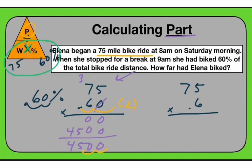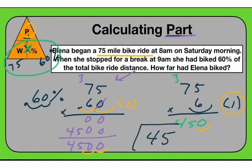On the other side, using 0.6 — six times five is 30, put a zero and carry the three, six times seven is 42, plus three is 45. That looks like 450, but I come back one decimal point and the answer is 45. So Alana has biked 45 miles in that hour — that is the part she biked.